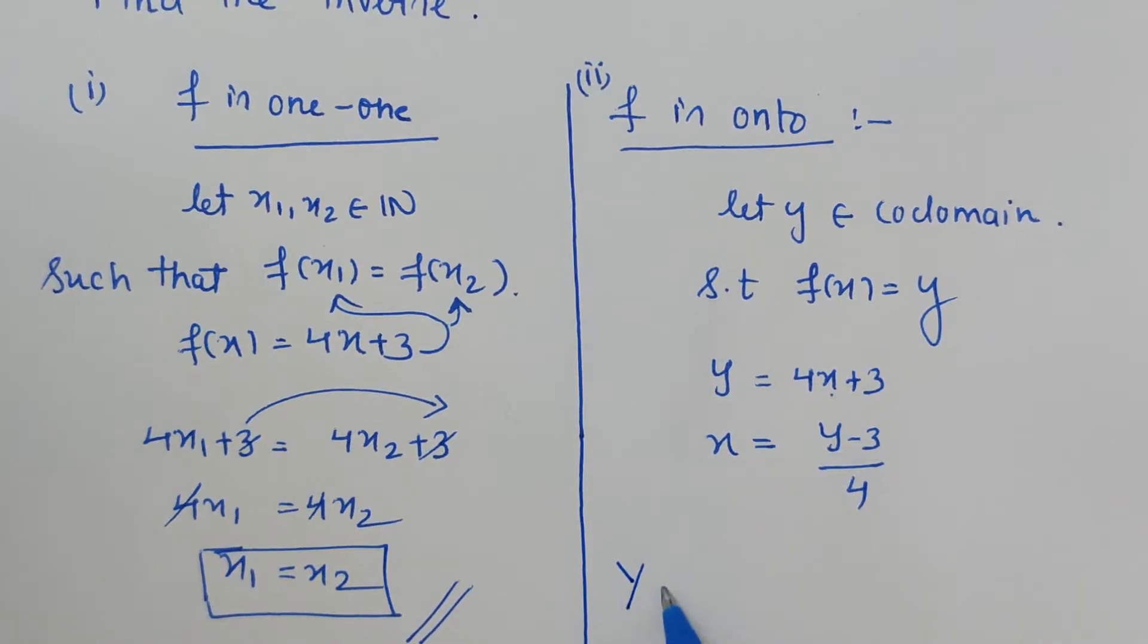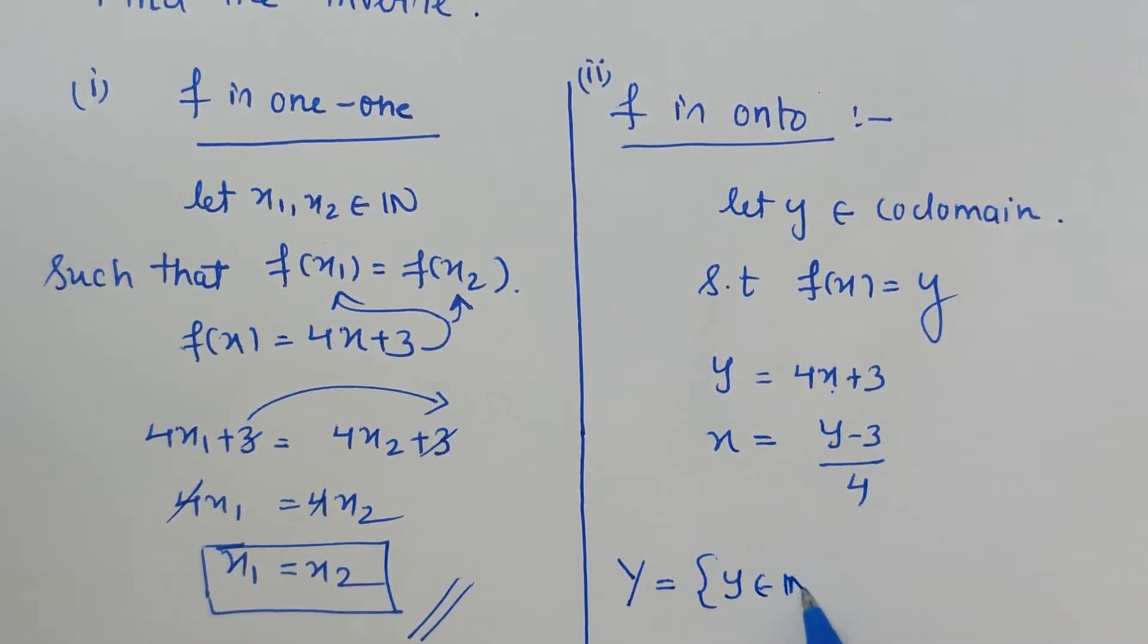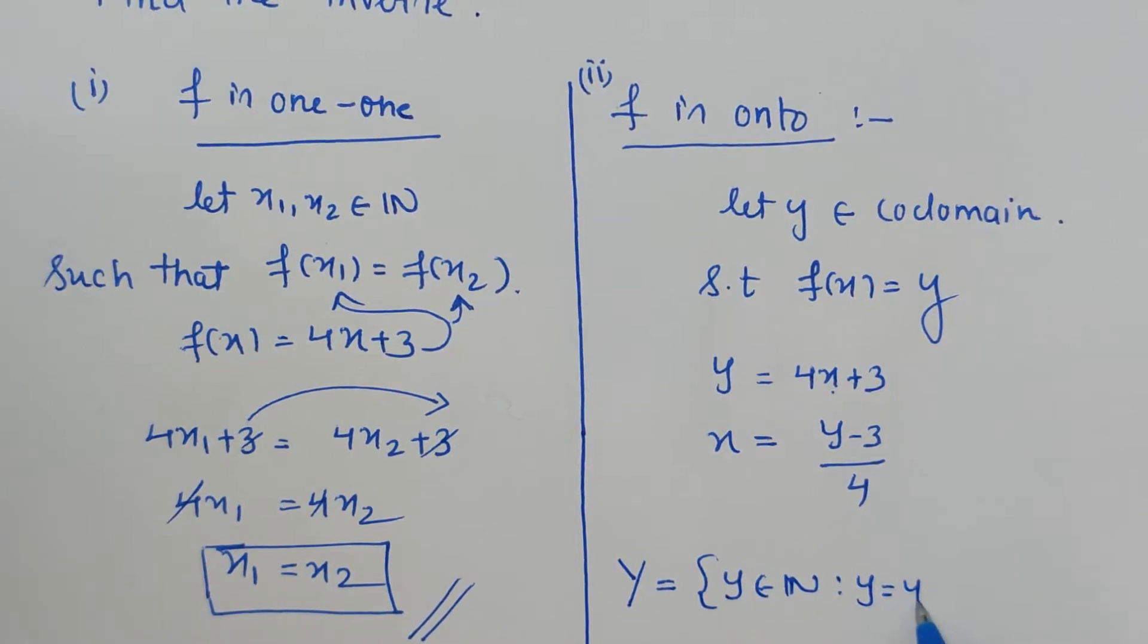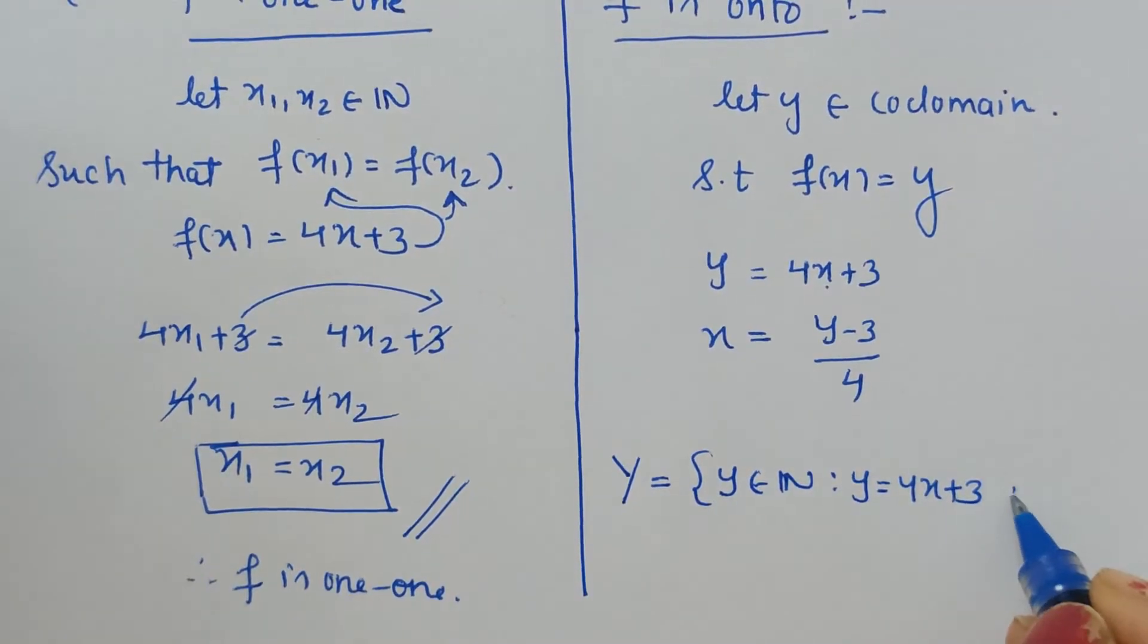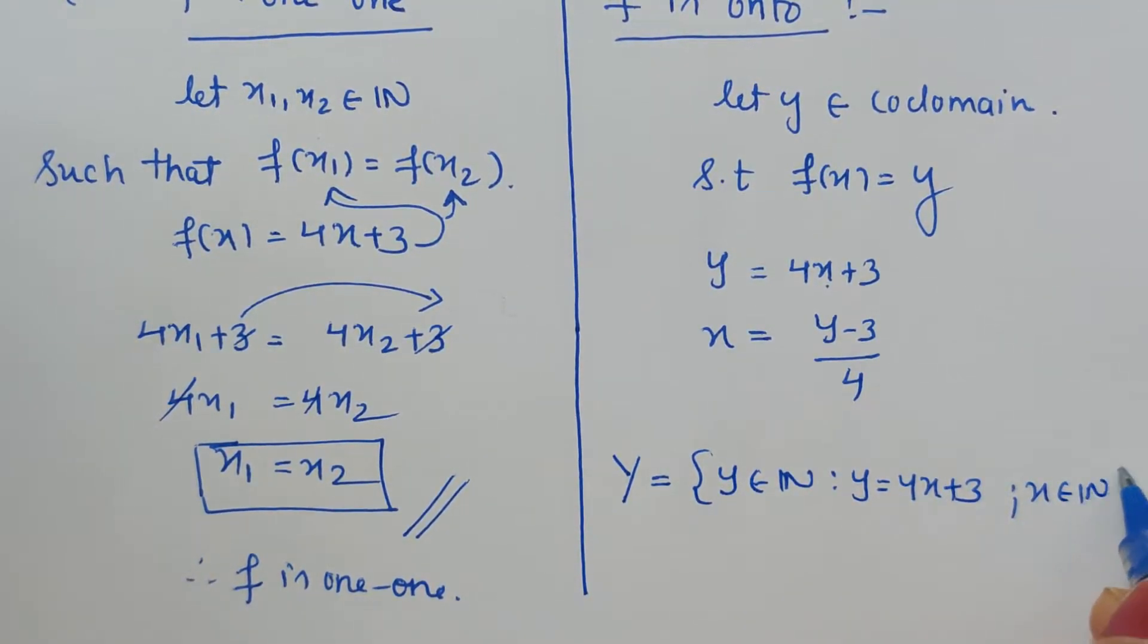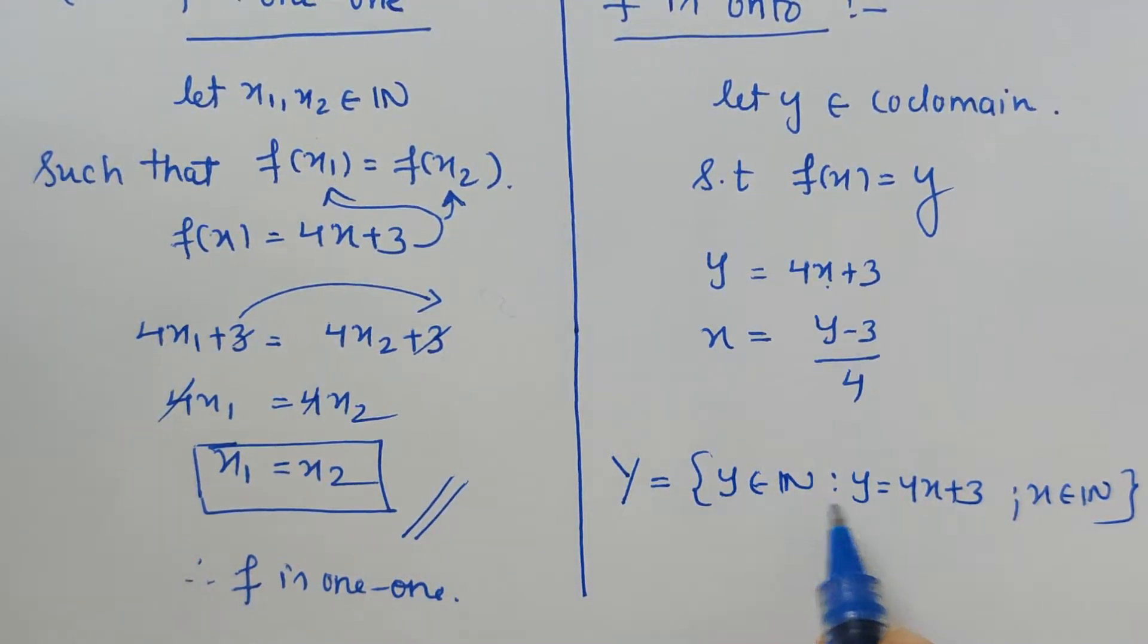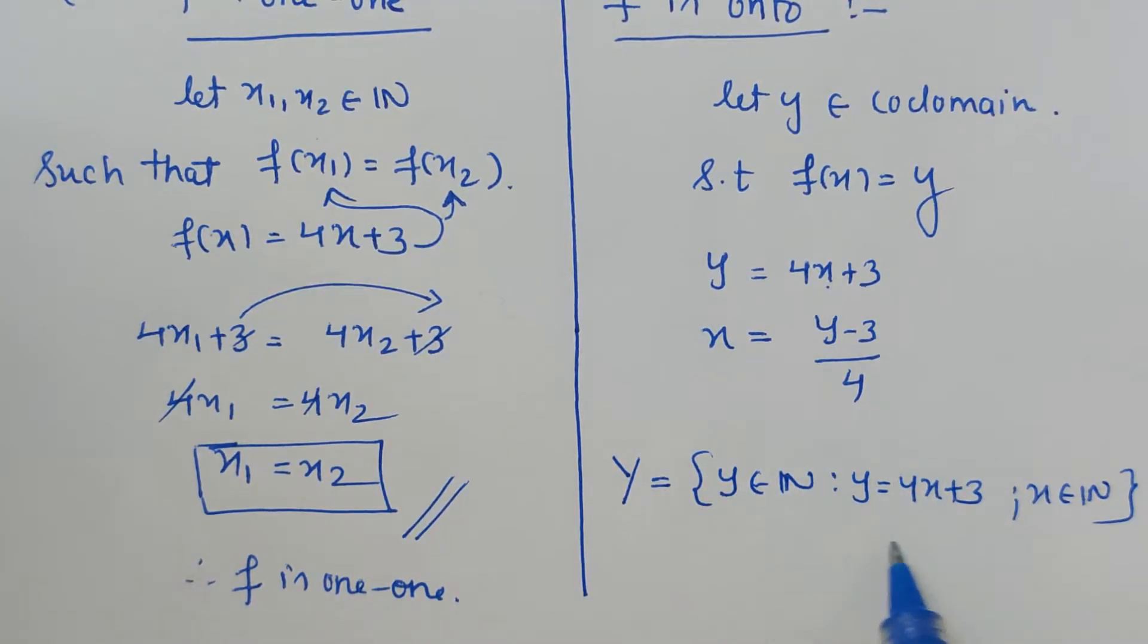Codomain is the set of all natural numbers such that y equals 4x plus 3, where x is any natural number. That means y is the collection of all results obtained solving this equation, and here x to be taken from natural numbers.